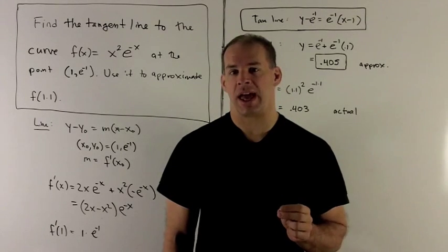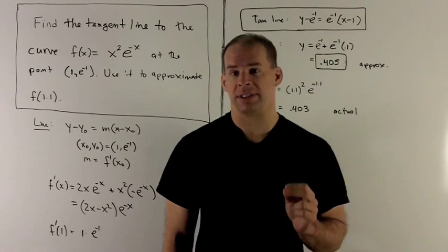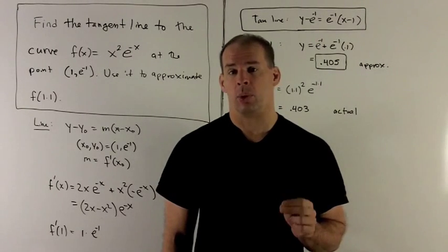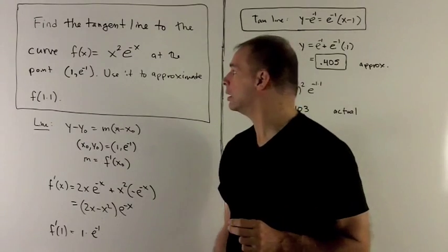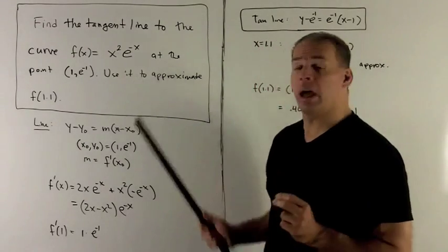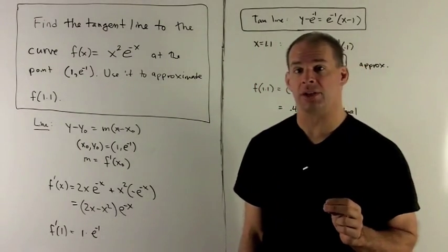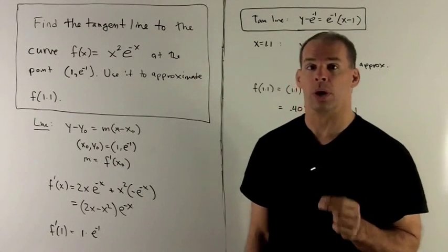Find the equation of the tangent line to the curve f(x) = x²e^(-x) at the point x = 1. Then, we want to use that tangent line to approximate f at 1.1.